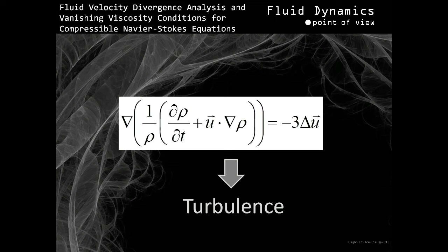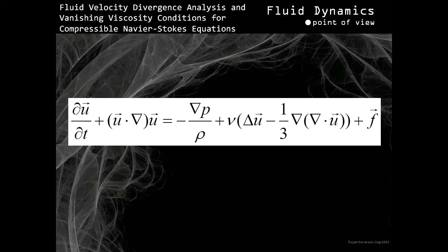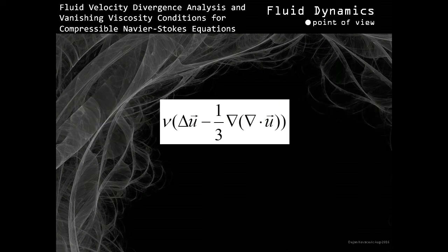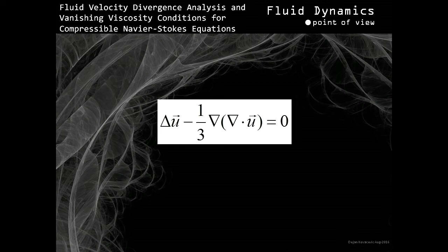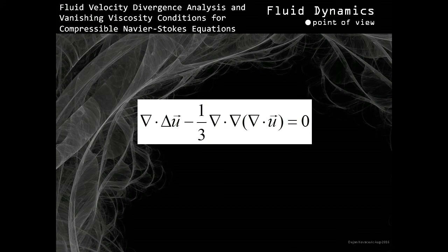From here, we will continue the analysis by deriving even more elementary conditions under which the viscosity-related term of the Navier-Stokes equation for compressible fluids equals to zero. Let's go back to the Navier-Stokes equation for compressible fluids expressed in the following way. Let's observe again, in a different form, the viscosity-related term of the Navier-Stokes equation for compressible fluids in more detail. Let's set the viscosity-related term equal to zero, then derive the condition which has to be satisfied. We easily conclude that this statement, once satisfied, would make the viscosity-related term of the Navier-Stokes equation for compressible fluids equal to zero.